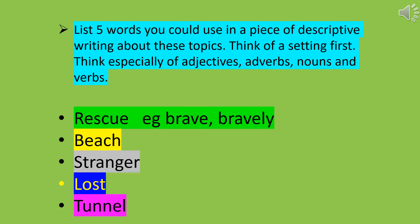Here's something to do: list five words you could use in a piece of descriptive writing about these topics. Think of a setting first, and think especially of adjectives, adverbs, nouns and verbs — you need to remember what those are. The five topics are rescue, beach, stranger, lost, and tunnel. I've given you an adjective and an adverb to get you started: brave (an adjective) and bravely (an adverb).